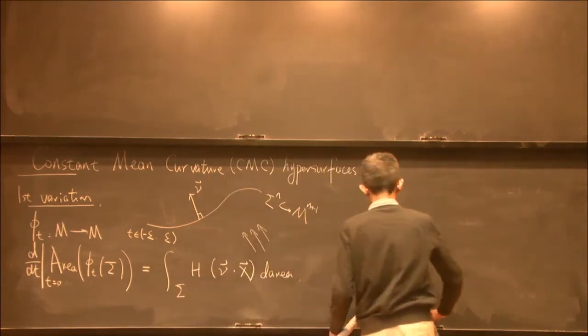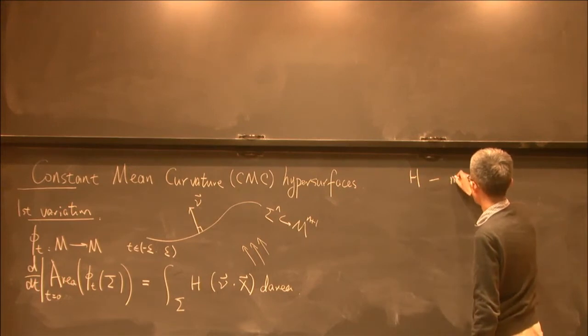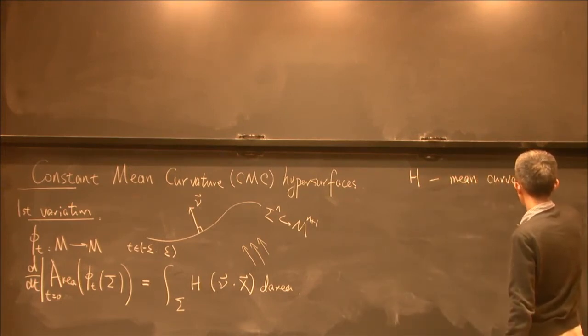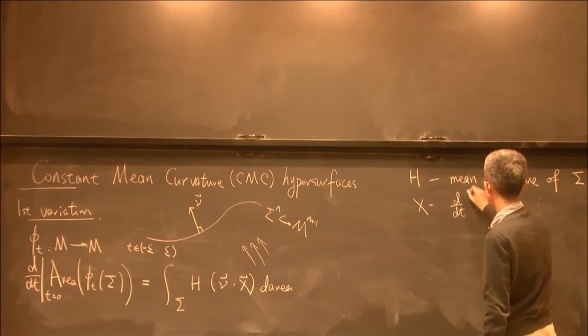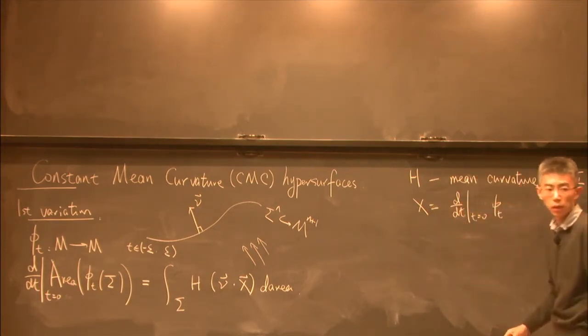So in this formula, H is the mean curvature of this hypersurface, and x is the velocity of this variation.